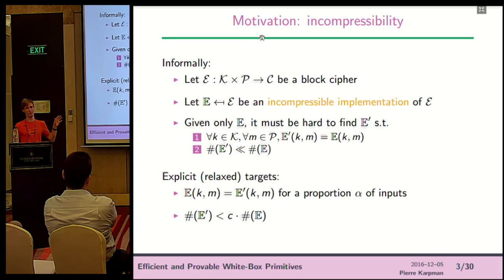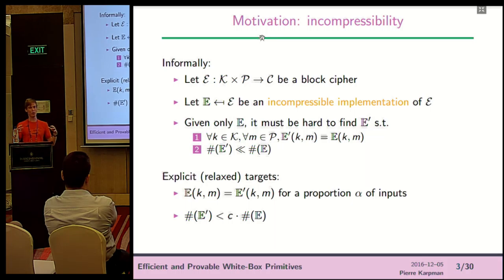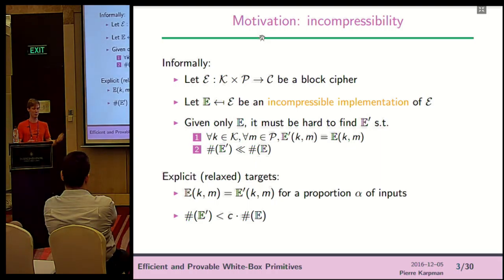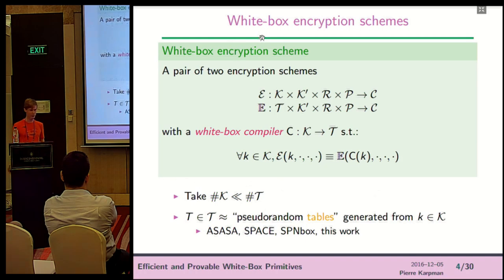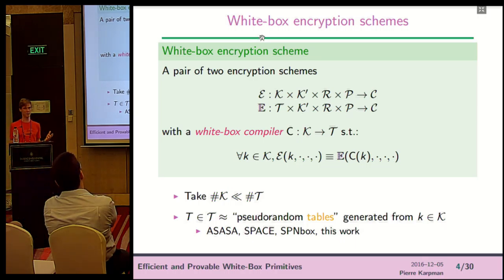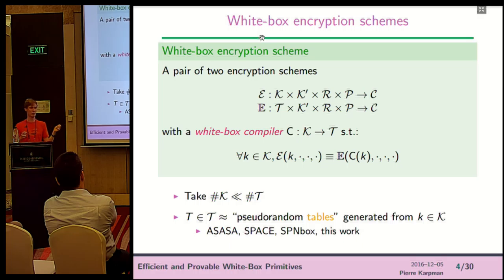We can relax this a bit, saying E and E prime don't need to be exactly the same — they can differ on a negligible fraction of the input space. Also, the compression needs to be by at least a factor c. For now, we define it as a randomized encryption scheme, which is more convenient — we just add an operating mode and some randomness.